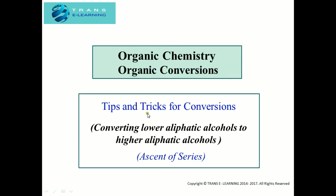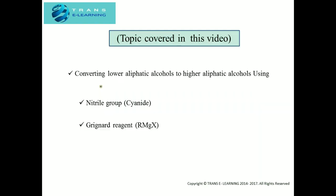In this video we'll be converting lower aliphatic alcohols to higher aliphatic alcohols — what we call a homologous series. We'll be covering two methods: using the nitrile group, that is the cyanide group, and the Grignard reagent, that is RMgX.